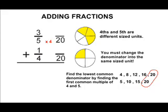whatever you do to the bottom, you do to the top. So now we're going to take 3 and increase that by a factor of 4 as well, and 3 times 4 is 12. So now we have the fraction 12 twentieths, which is equivalent to 3 fifths.